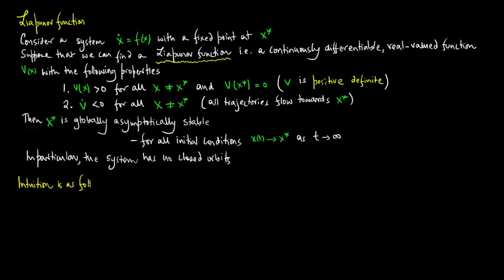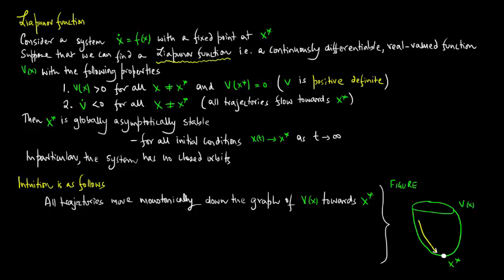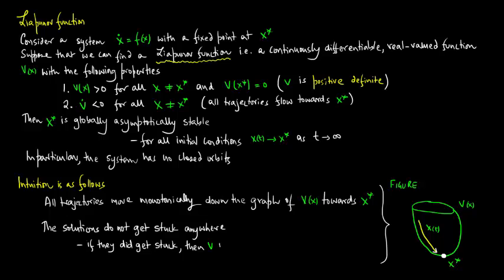The rough intuition is as follows. All trajectories move monotonically down the graph of V(X) towards X-star. The equilibrium point is X-star, and the graph of V(X) shows that trajectories move monotonically towards X-star. These solutions do not get stuck anywhere; if they did, V would stop changing. But by assumption V-dot is less than 0 everywhere except at X-star.